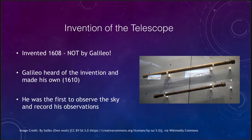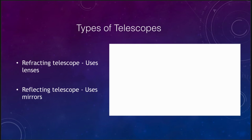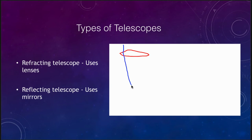There are two primary types of optical telescopes. The first is the refracting telescope, which uses lenses to bring things to a focus. Light travels through the lens, gets bent, and is brought to a focus, allowing you to gather more light than you would otherwise be able to see.